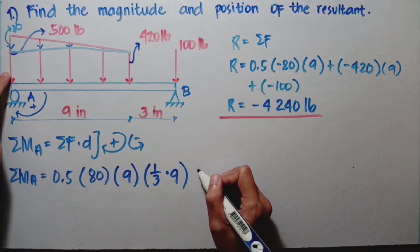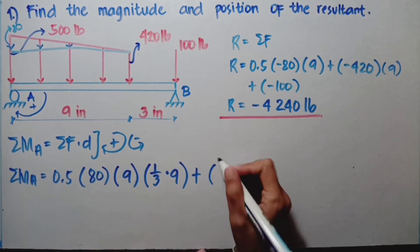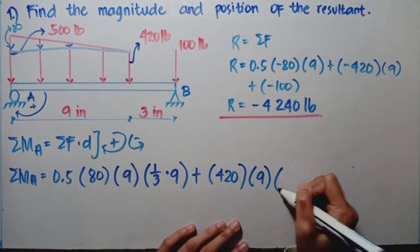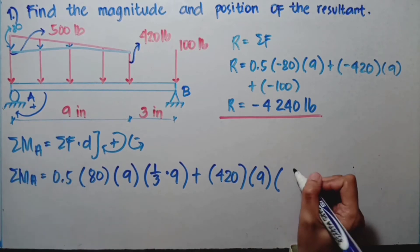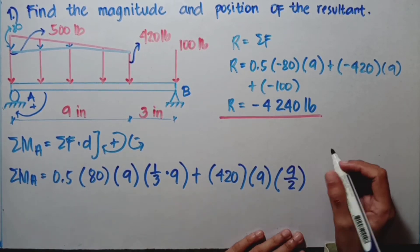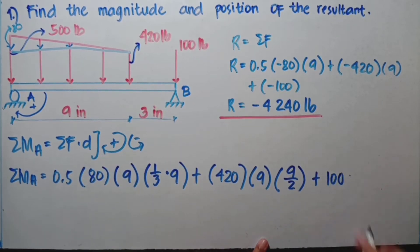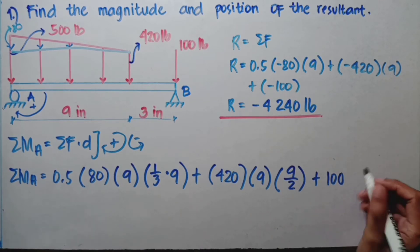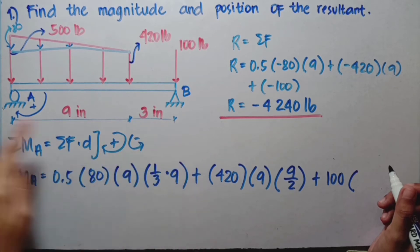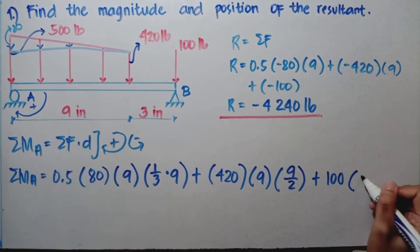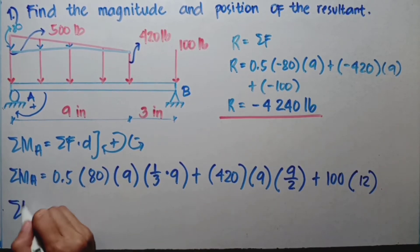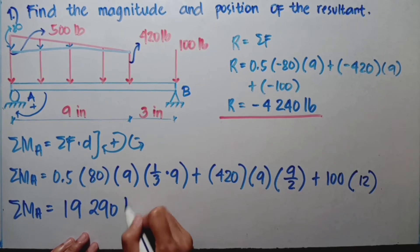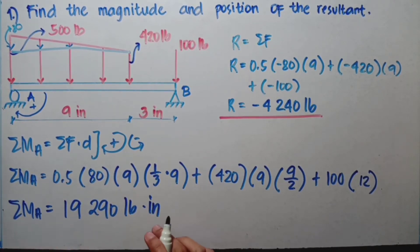Then for the uniform load, plus 420 times 9 times one-half of its length, so 9 over 2. For our 100-pound load, positive 100 since its rotation is also clockwise toward A, and its moment arm from where it is to where we are taking the moment is 3 plus 9, which equals 12. So 100 times 12. When we calculate all of this for summation of moment at A, we get 19,290 pound-inches. Don't forget the units: pounds and inches.